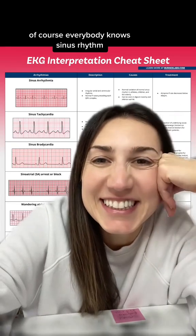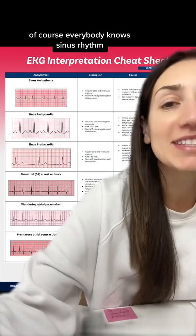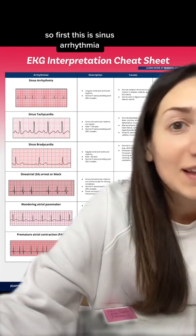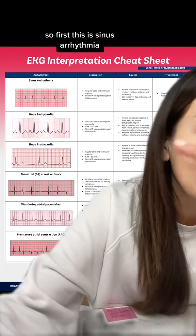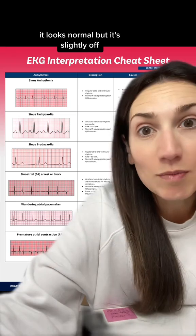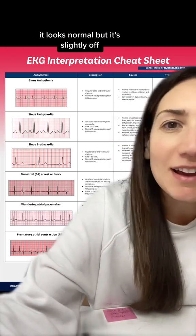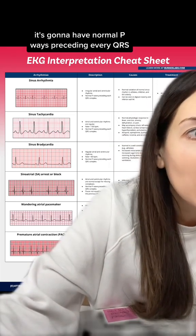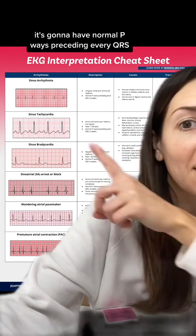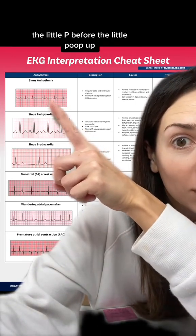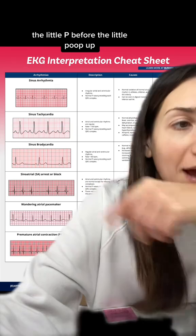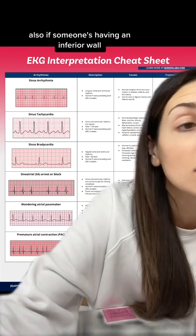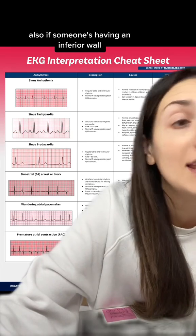Sinus arrhythmia looks normal but it's slightly off, kind of like a homeschooled kid. It's going to have normal P waves preceding every QRS. It's actually pretty common in athletes.